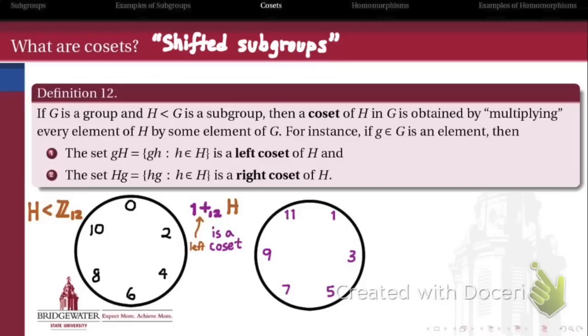We've just taken the elements 0 through 10, and we just kind of rotated them around the clock by 1 hour. Here it was a left coset, because I added 1 on the left, but because Z12 is an abelian group, I get the same result if I add 1 on the right instead.